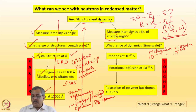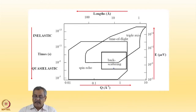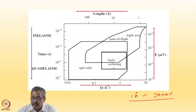The discussion on inelastic neutron scattering for dynamics will target the question: what Q range and what energy range? In case of neutrons the wavelength of 1 angstrom and the energies are closely matching, and neutrons penetrate very deeply, so we can span a very large part of the Q-omega space.